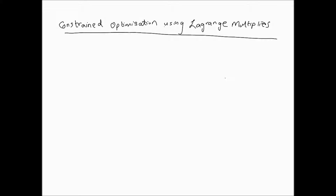In this video we're going to look at the concept of constrained optimization using Lagrange multipliers. What we've looked at so far in the previous two videos are local maximum and minimum, and then absolute maximum and minimum values of functions. Now we're going to introduce the idea where you have some function f, and you want to find the maximum or minimum values of this function subject to another function, let's say g, which is equal to some constant k.